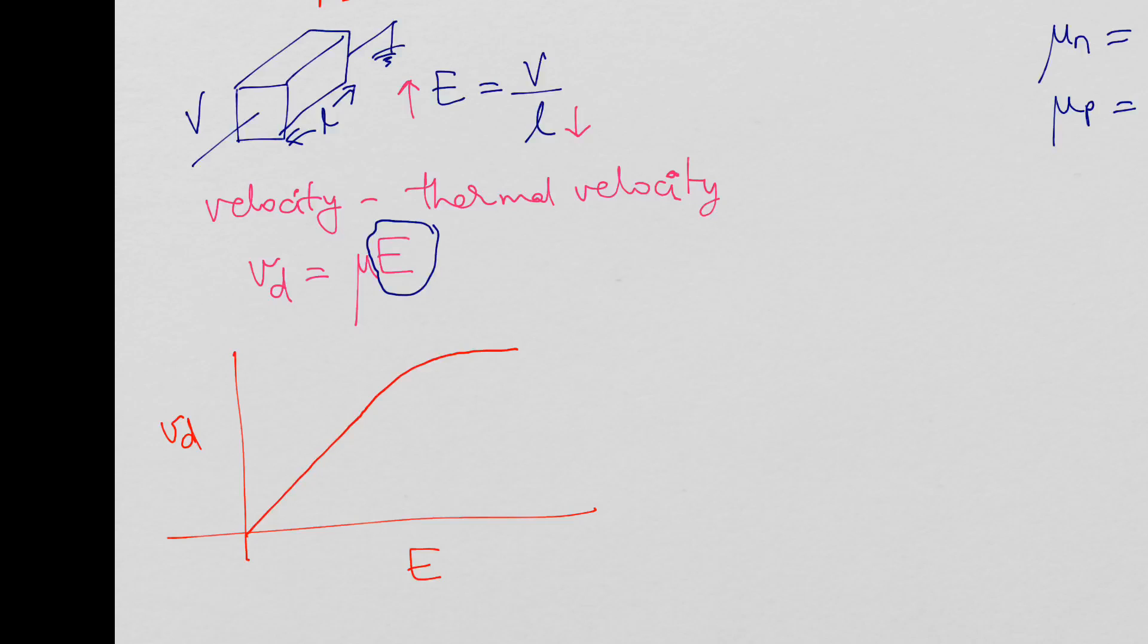That's why mobility falls. Mobility falls with large electric fields. Short channel devices usually suffer this. If you have very short lengths here, you could have lower mobility than if you compare a sample with a larger length. So that's how mobility varies.